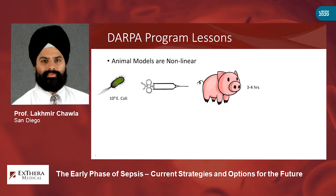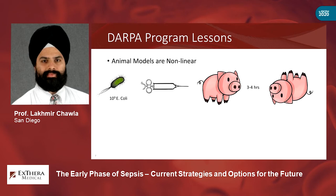There is a well-characterized pig model where you give 10 to the 9th E. coli intravenously, and three to four hours later the pig is dead, giving a very nice pattern of classic sepsis markers — coagulopathy, fever, hypotension. If you're a lab researcher, you come in the morning, induce sepsis, do all your experiments, and the pig is dead by dinner time. But this was not a good model for what we were trying to do, because we needed an animal that gets sick and then has an opportunity to be treated on a dialysis-like therapeutic.